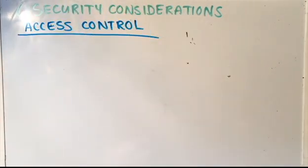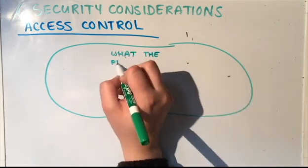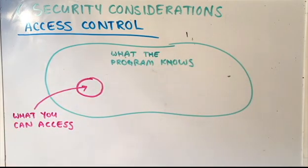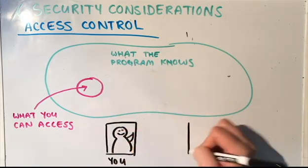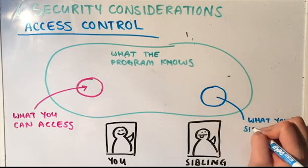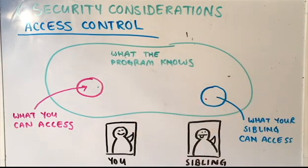Access control works to prevent unauthorized use of resources. For example, if you and your sibling share a computer, you might have different login profiles. You can't access your siblings information from your account, and they can't access your information if they're logged in on their account.